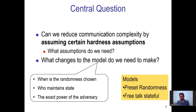The first is the preset randomness model, where there is a common source of randomness, but the inputs are chosen by an adversary who sees the common randomness also. The second model is the free-talk model, which we will discuss later.